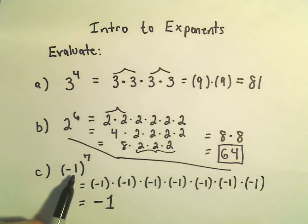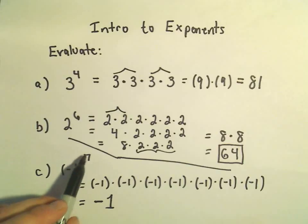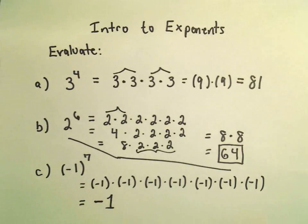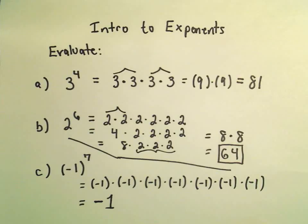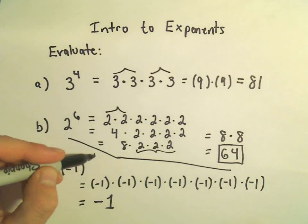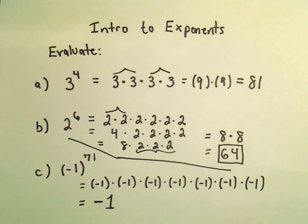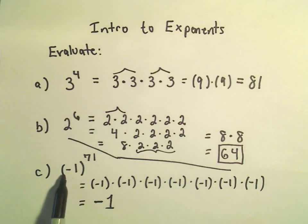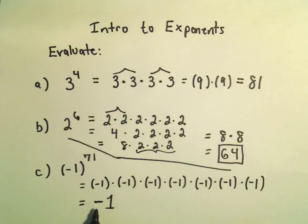This is kind of important: if you take a negative number and raise it to an odd exponent, it's always going to be some negative number at the end. So this could have been negative 1 to the 71st power — again, I would have an odd number of negative signs, which means I would get a negative at the end. So negative 1 to the 71st power would also equal negative 1.